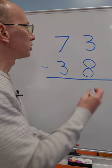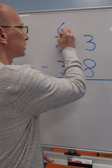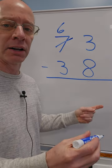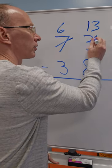Can I borrow one? Sure. So I cross off the seven, make it a six. Remember, I'm taking a 10 away from there. So I take 10 plus the three, which is 13. So I put the 13 right here. Cross off that three.